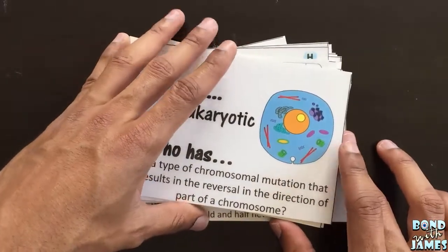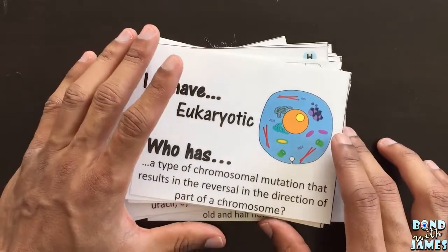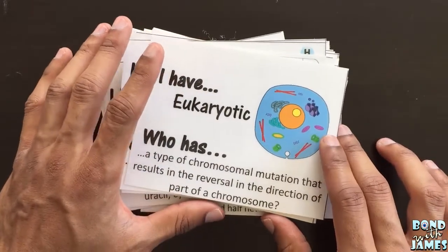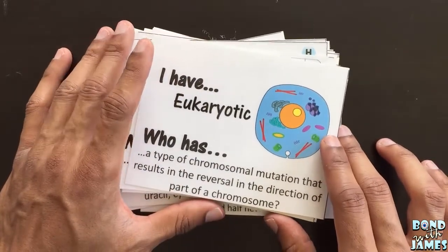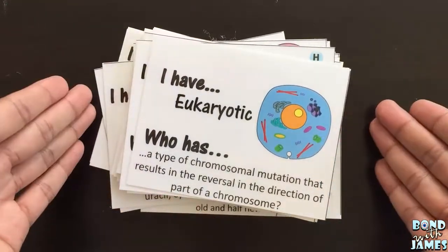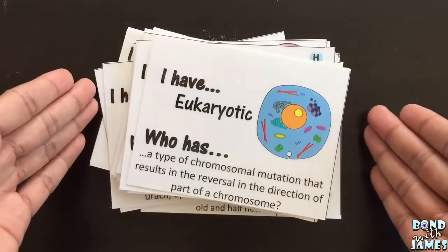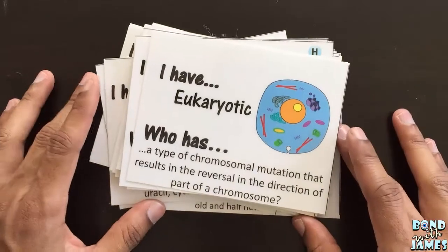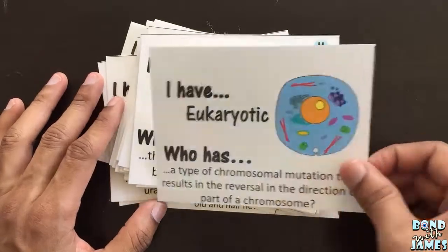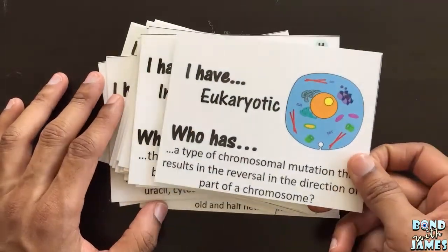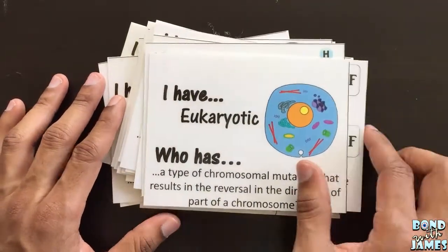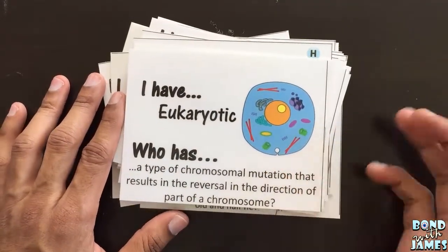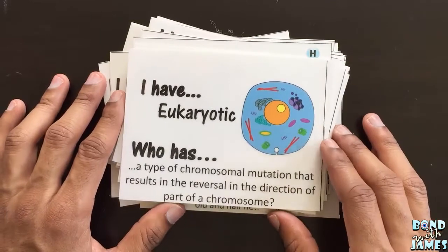If you want to play the whole class, and let's say, for example, you had the magic number — 24 students, because there are 24 cards in this set — then each student would receive a card. So you can play that way as well.